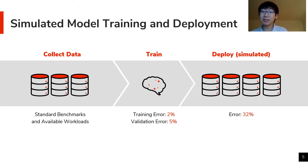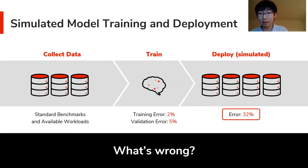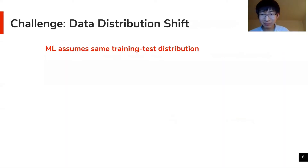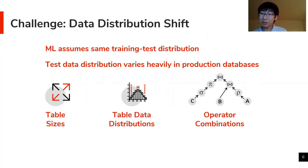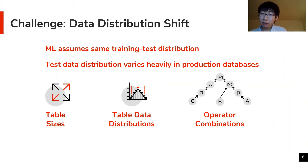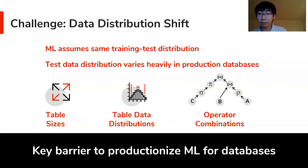While the model has very good training and validation error, it has a very high test error on the simulated deployed databases. The issue is that machine learning, especially supervised learning, fundamentally assumes that the training data and the test data come from the same distribution. However, in database deployments, there are various sources for shifts in the data distribution — for example, different table sizes, table data distributions, as well as combinations of operators in queries — which can make test data very different from training data and lead to huge model error. We think such data distribution shift has really become a key barrier to productionizing machine learning for databases.